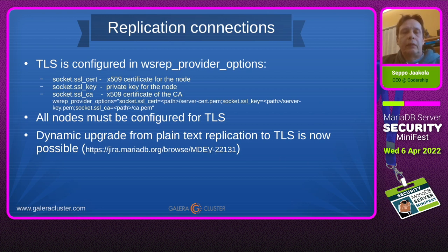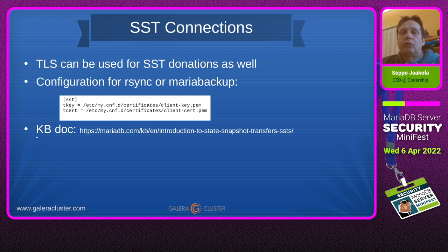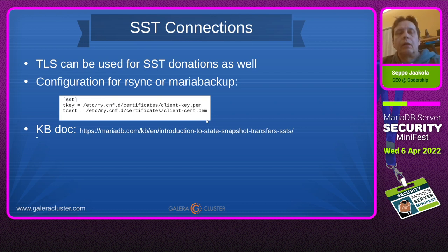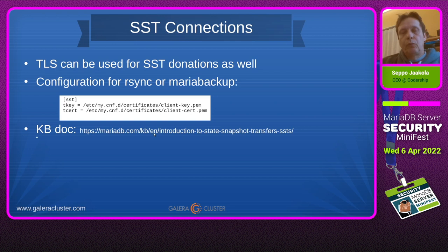There is a recent MDEV fixed as MDEV-2131 which implements dynamic upgrade from plain text replication to TLS. For SST connections — these are the connections where a new node joins the cluster and requests a full database snapshot. The two principal methods are RSync or MariaBackup. You configure TLS for them in the MariaDB configuration file in an SST group, providing your certificate path. After that, the SST connection will go through STunnel as a TLS-encrypted connection. There is a knowledge base document with more details.